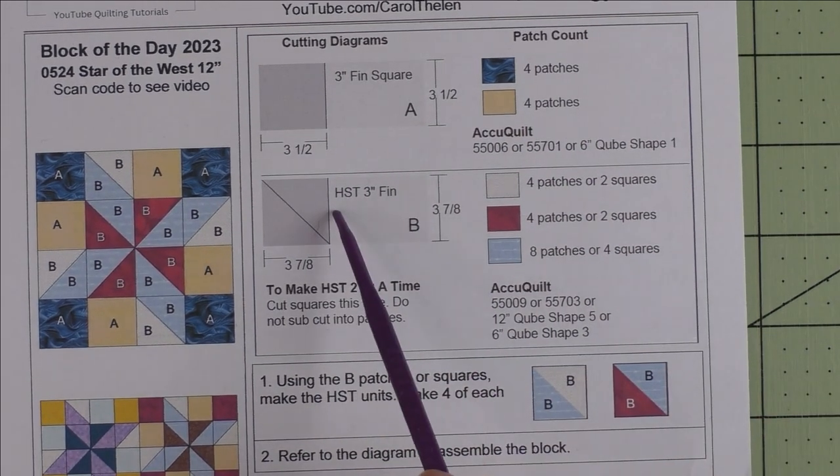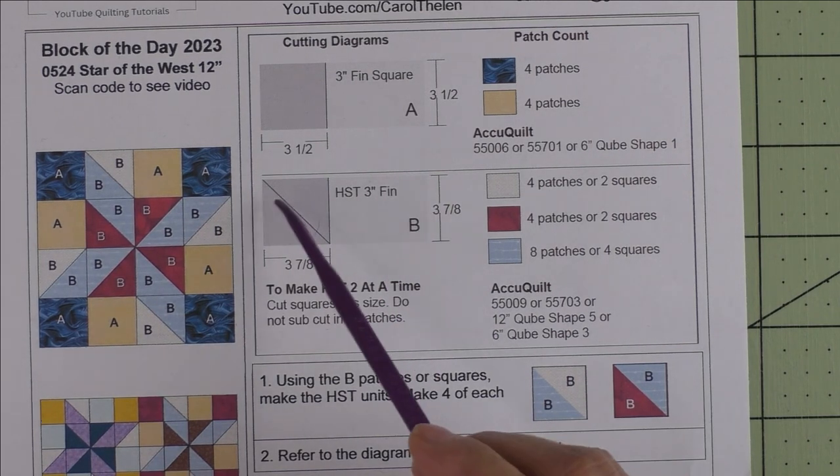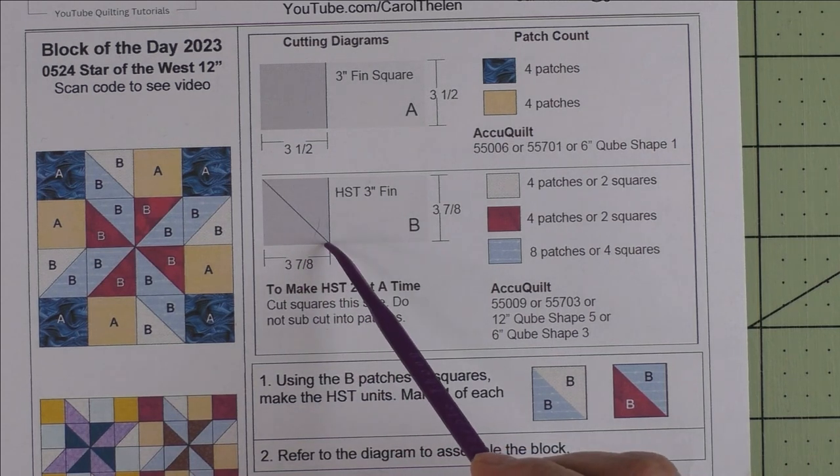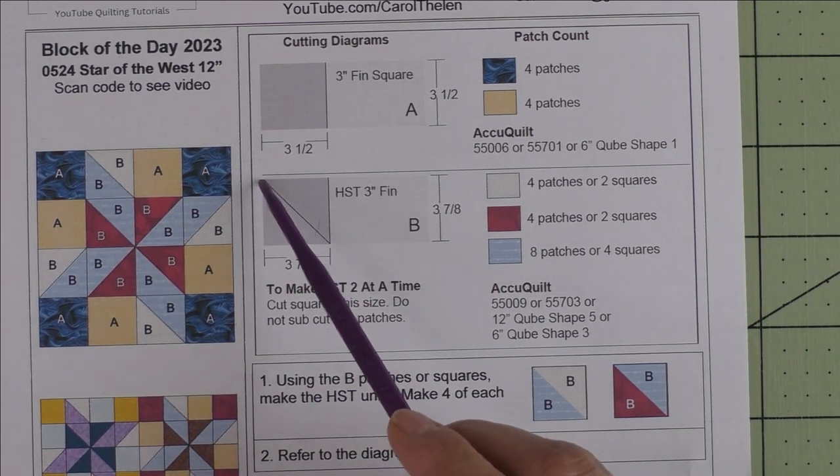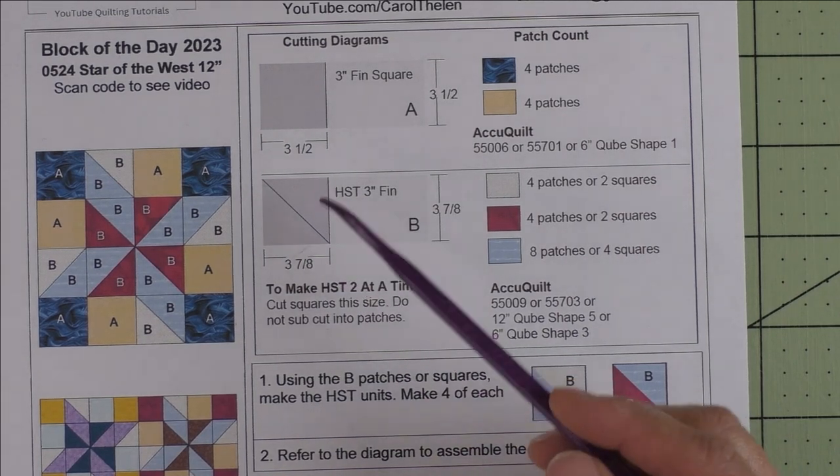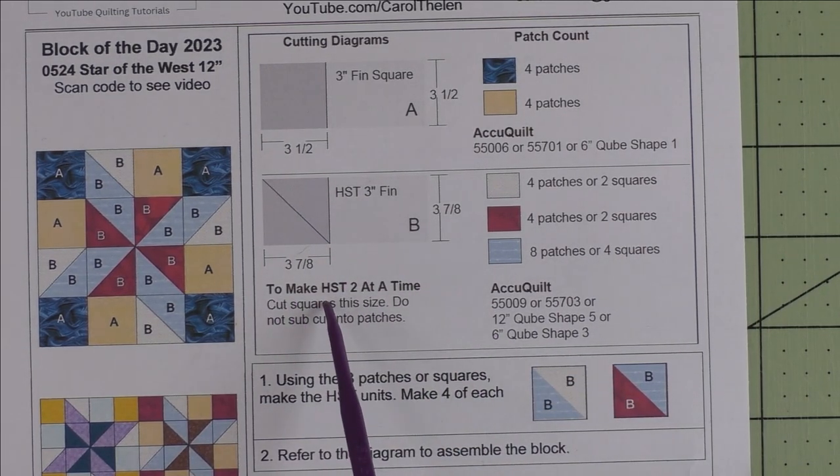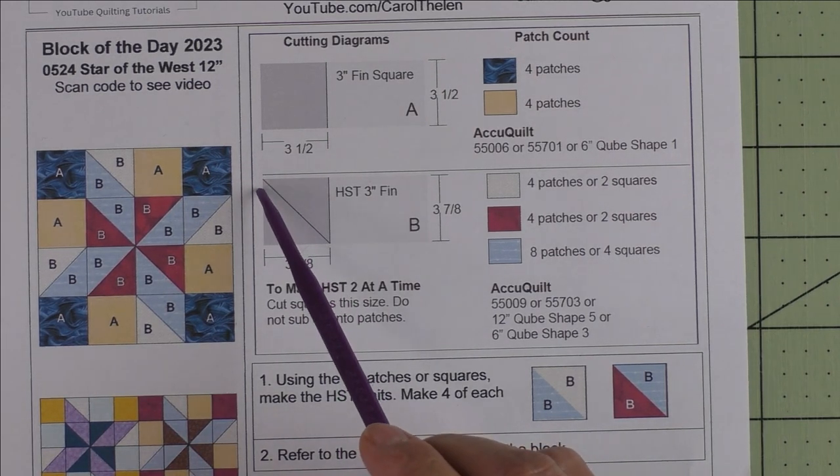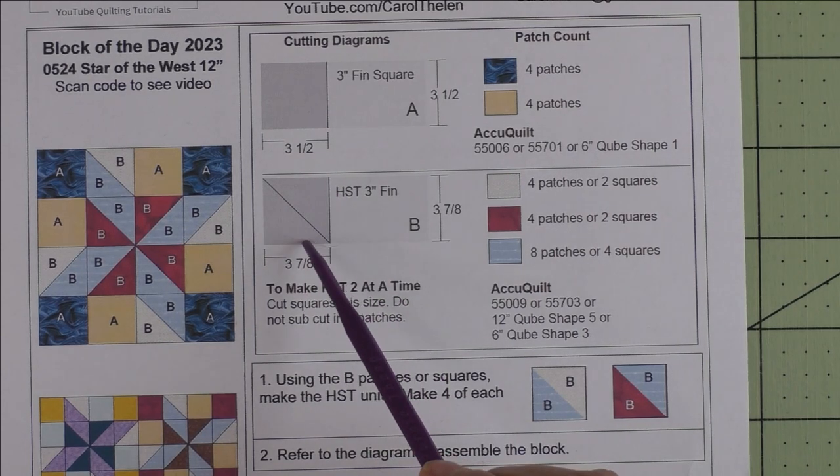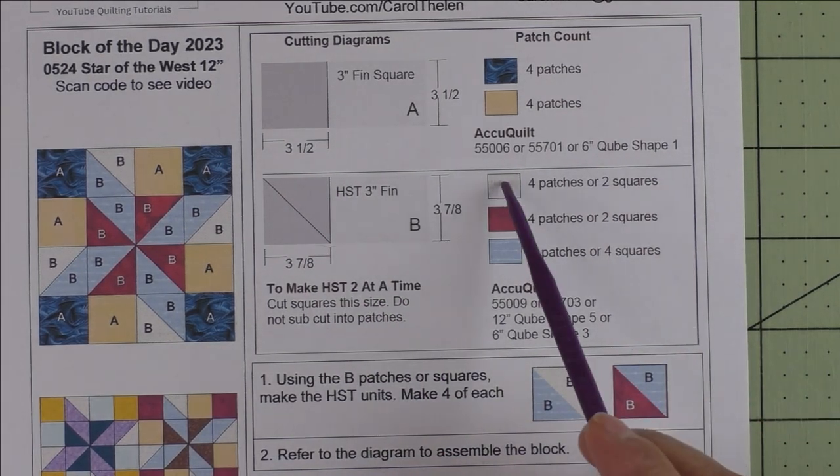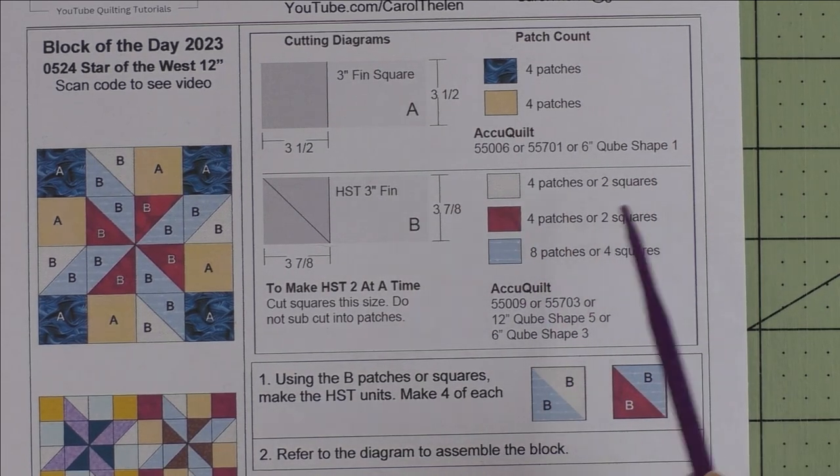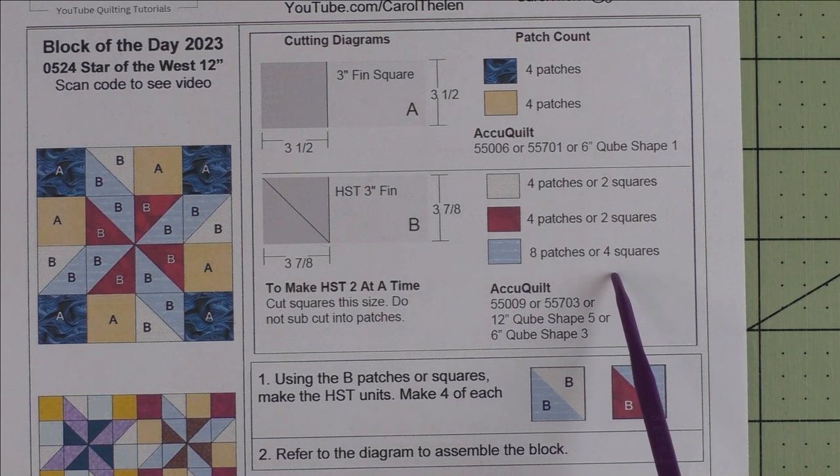Patch B is a three-inch finished half-square triangle. We're going to rotary cut three-and-seven-eighth-inch squares. If you're doing patches, you'll cut them in half once diagonally. But for this demo, we're going to be making two-at-a-time half-square triangles. So we're going to rotary cut the three-and-seven-eighth-inch squares and not sub-cut them. For the background, we'll need two squares. For the red, we'll need two squares. And for the light blue, we'll need four squares.